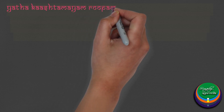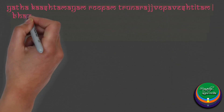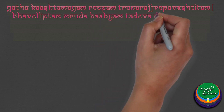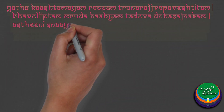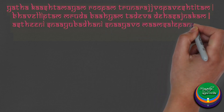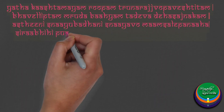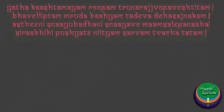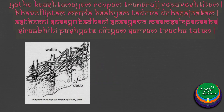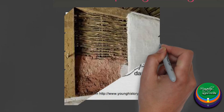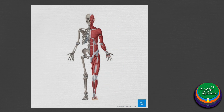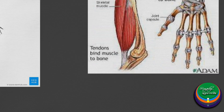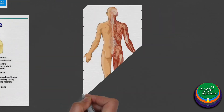According to the verse from Kashyapa Samhita: like a structure made of wood is bound together with ropes of grass and externally plastered with mud, the body is made up of bones bound together with ligaments and coated with muscles, nourished by the vessels and enclosed by the integument.